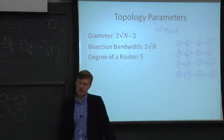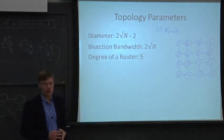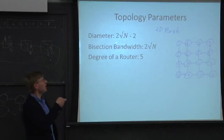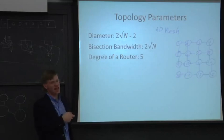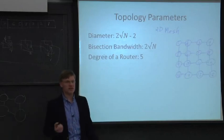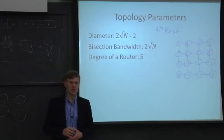If you want to look at a 3-cube or a 3D mesh here, it's going to be something like n k root of n minus n, where n is the number of nodes in our system.